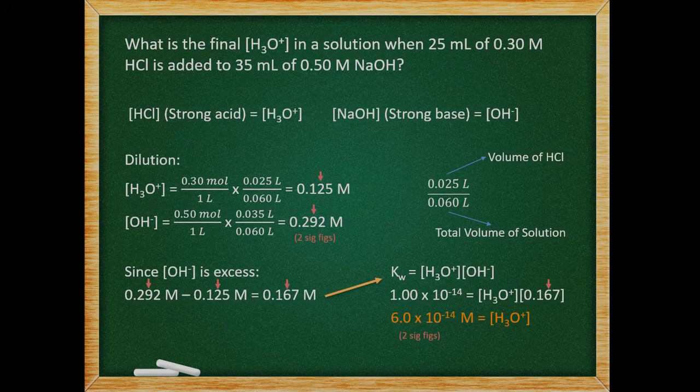What is the final hydronium concentration in a solution when 25 mL of 0.30 molar hydrochloric acid is added to 35 mL of 0.50 molar sodium hydroxide? We are dealing with a strong acid and strong base so they ionize and dissociate 100%. However, we must take into account the dilution factor because we are adding these two things together. By multiplying the initial concentrations by the volume of the initial solution divided by the total volume, we get our concentrations of hydronium and hydroxide. Hydroxide is in excess so we subtract the concentration of hydronium from hydroxide to give us the concentration of hydroxide left over. We can then plug this into our Kw expression to get the final concentration of hydronium.